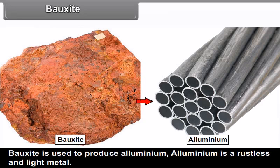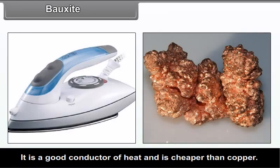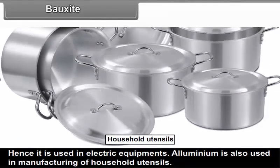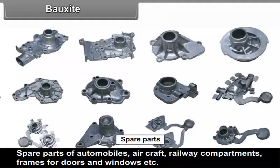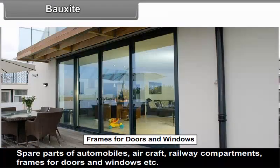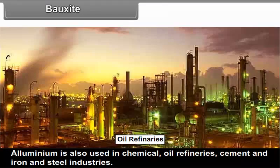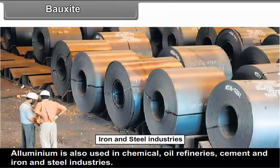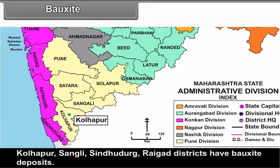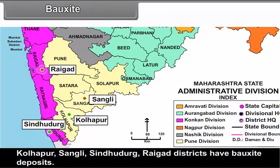Bauxite: Bauxite is used to produce aluminium. Aluminium is a rustless and light metal. It is a good conductor of heat and is cheaper than copper, hence it is used in electric equipment. Aluminium is also used in manufacturing household utensils, spare parts of automobiles, aircraft, railway compartments, frames for doors and windows, etc. Aluminium is also used in chemical, oil refinery, cement and iron and steel industries. Maharashtra is the leading bauxite producing state in India. Kolhapur, Sangli, Sindhudurg and Raigad districts have bauxite deposits.